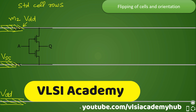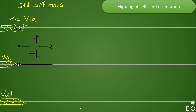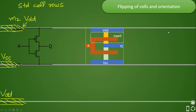Now let us assume a CMOS will be placed like this — this is just a schematic example. In reality, it will be a standard cell layout placed here. If you see, your VDD is overlapping with the VDD rail and your VSS is overlapping with the VSS rail in this row. This kind of placement is referred to as an orientation, and we will call this R0 orientation.